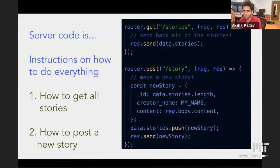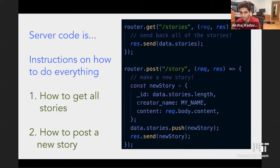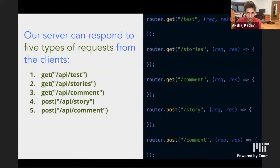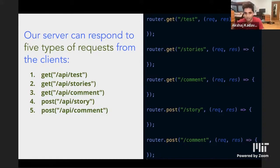We did a little bit of this yesterday where we had our router.get and router.post. The server code is basically instructions on how to do things. We tell it: how do you get all the stories? You send back this variable data.stories. How do you make a new story? You create a new story and add it to the array, then send it back. Once it has these instructions, our clients — the people on the website — can make any of these requests and our server knows how to respond to them. The server is kind of like the brains.